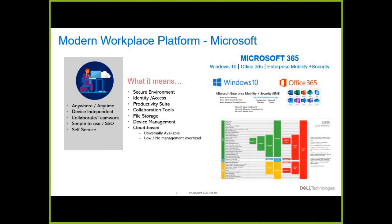Each workload can be enabled depending on the license you have, and licensing doesn't need to be the same for everyone — it just needs to be right for each user. For example, a user who only accesses web-based applications and OneDrive storage may only need an E1 license, which is the least expensive. Your Microsoft team can help determine the right licensing for your situation.